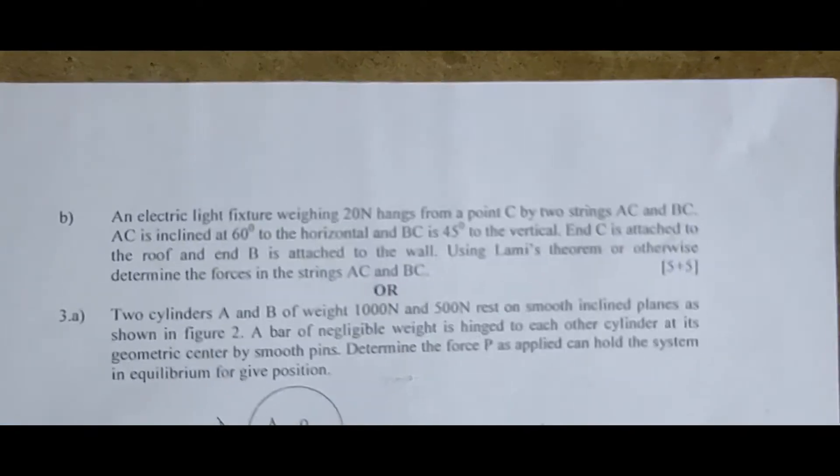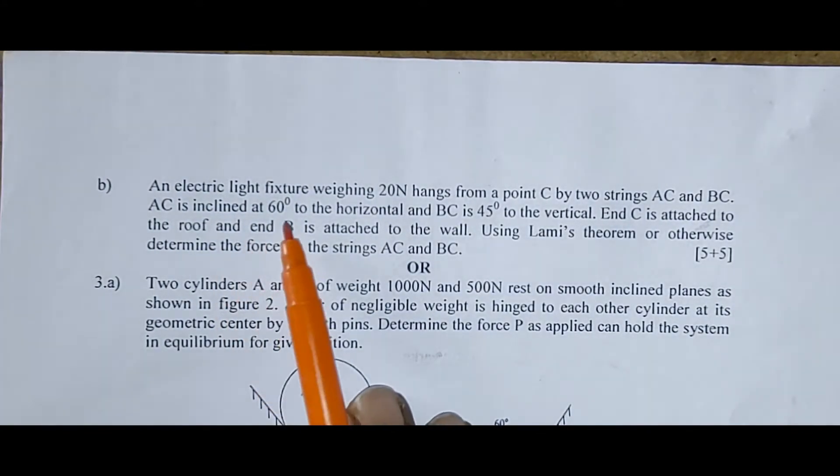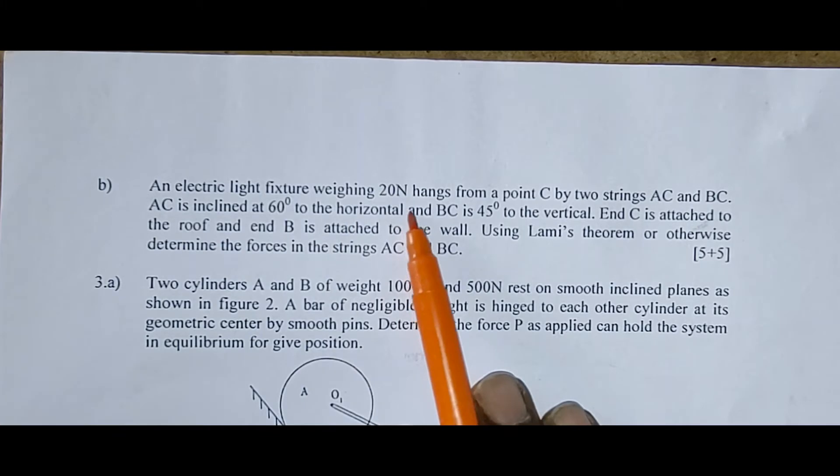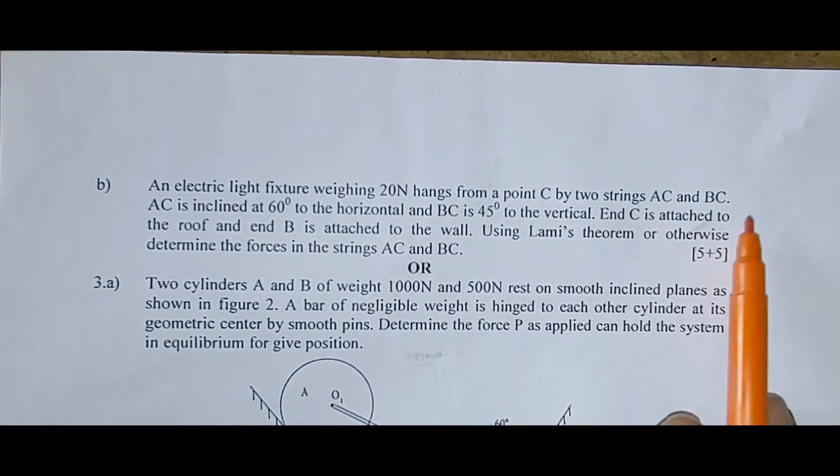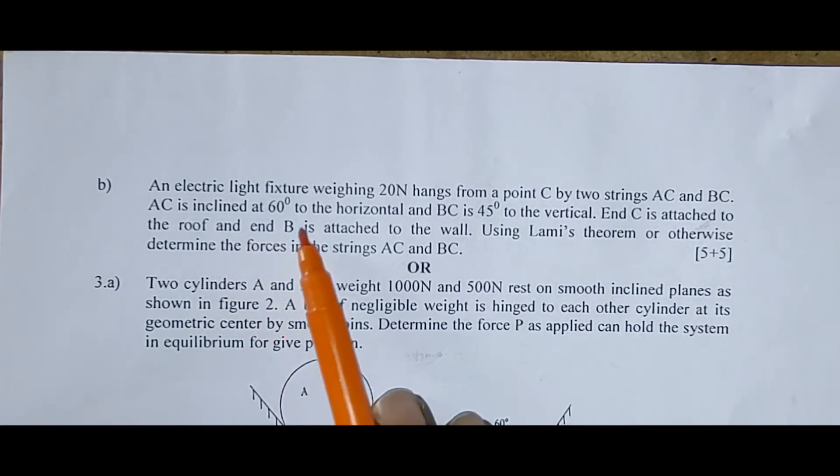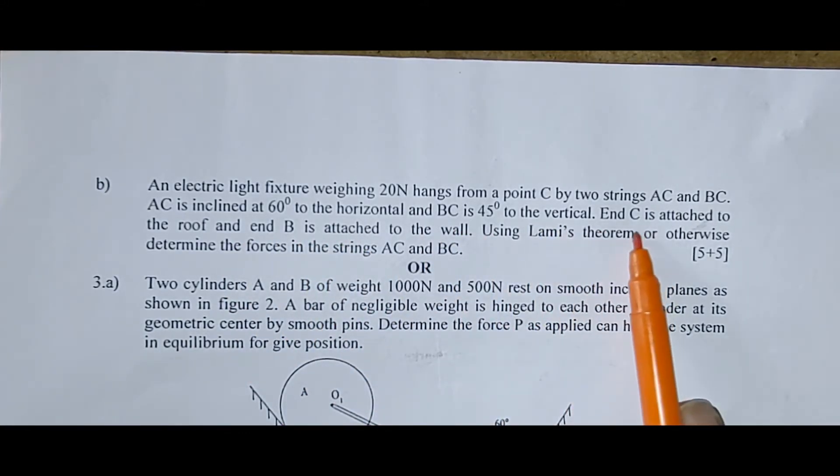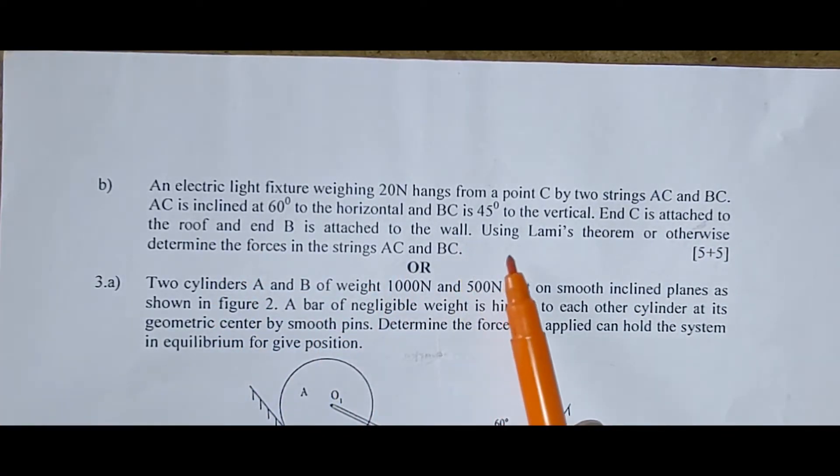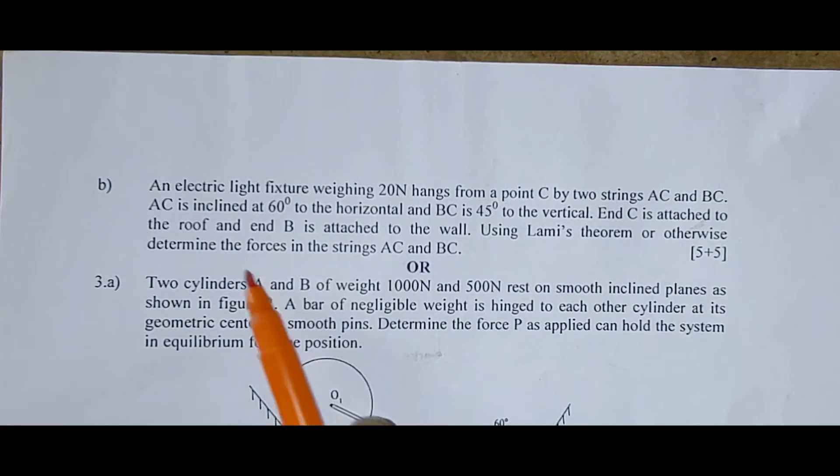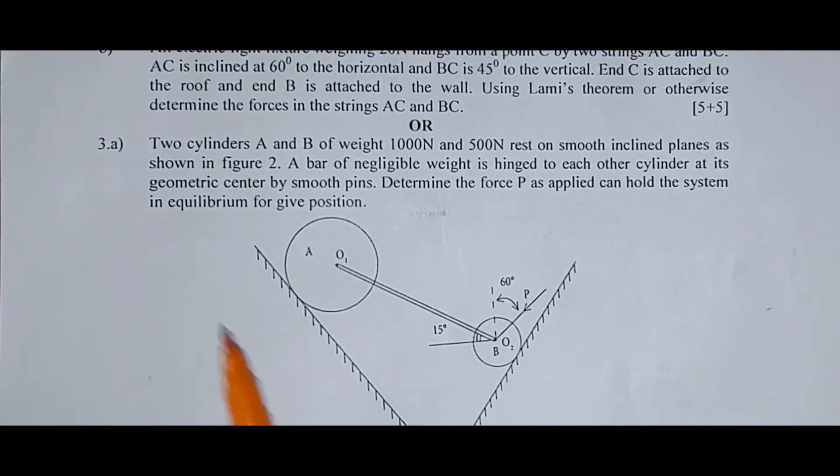Next question is, an electric light fixture weighing 20 N hangs from a point C by two strings AC and BC. AC is inclined at 60 degrees to the horizontal and BC is 45 degrees to the vertical. End C is attached to the roof and end B is attached to the wall. Using Lami's theorem or otherwise determine the forces in the strings AC and BC.